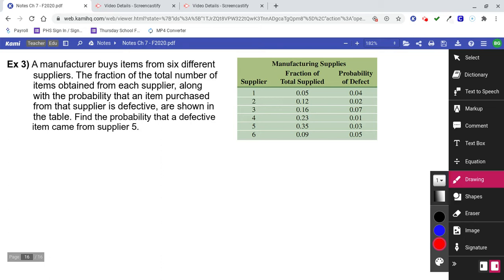When they give you a chart like this, it's kind of nice because all you have to do really is remember that this is part over total. So think about that formula for Bayes' theorem. And notice that they're asking me about supplier five.